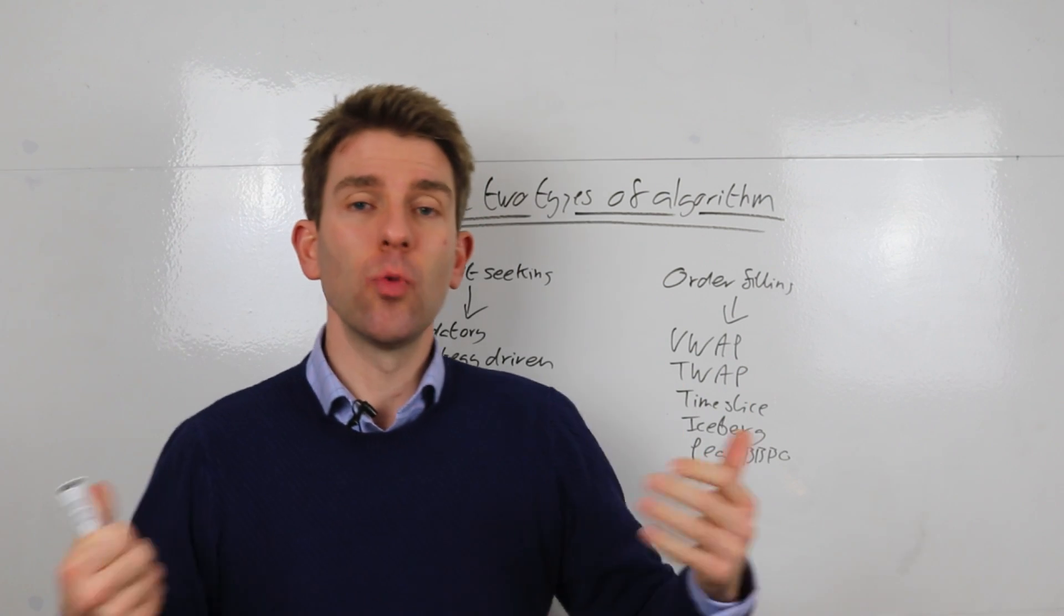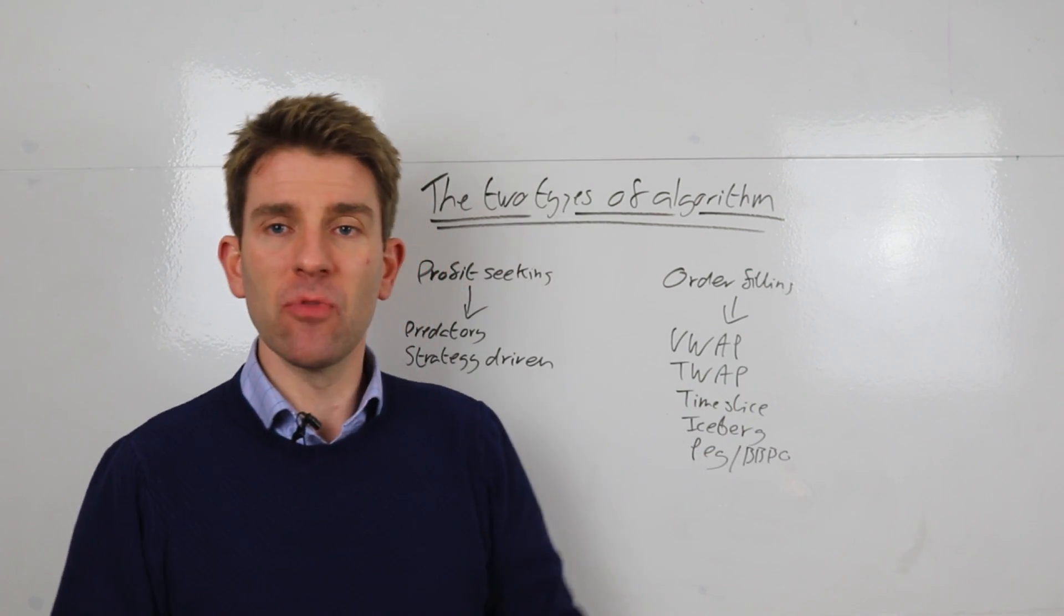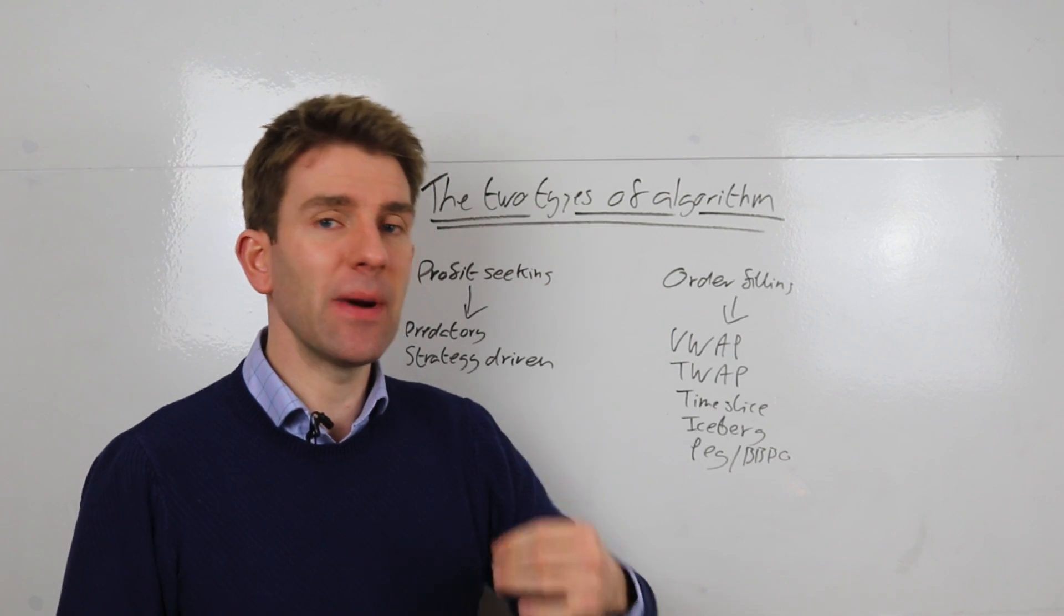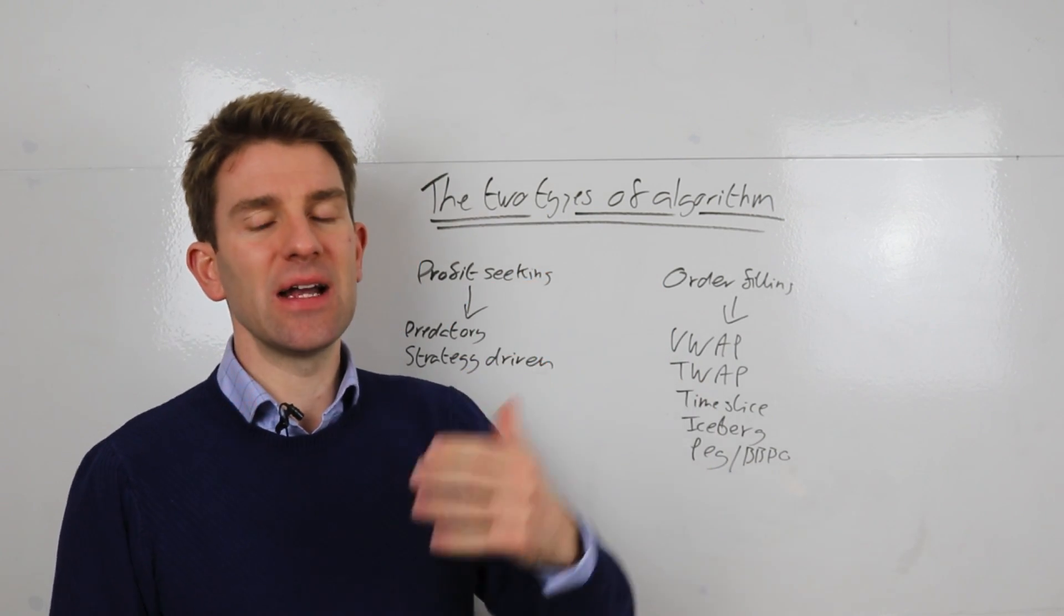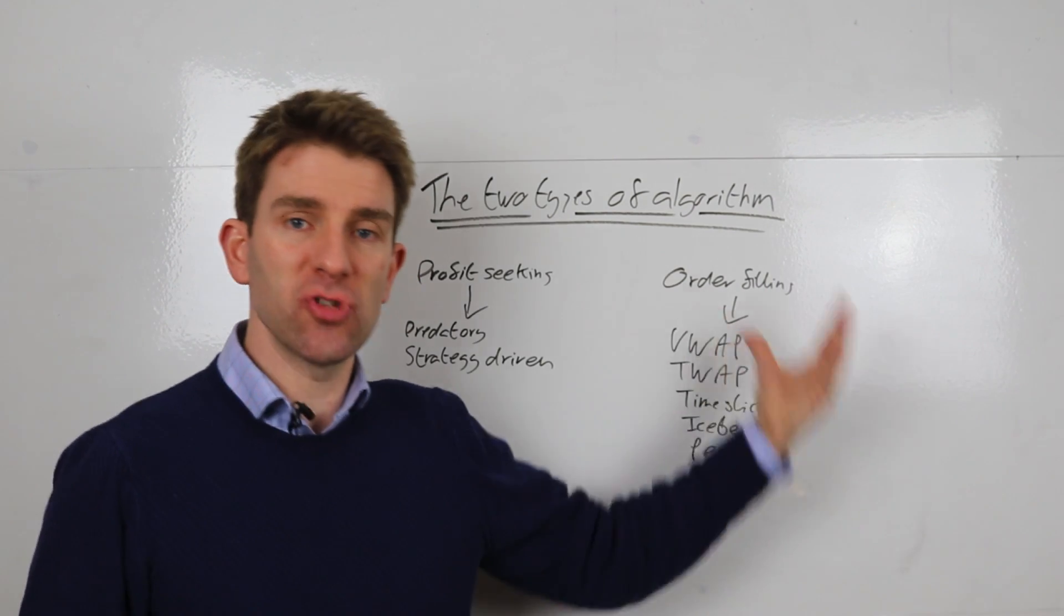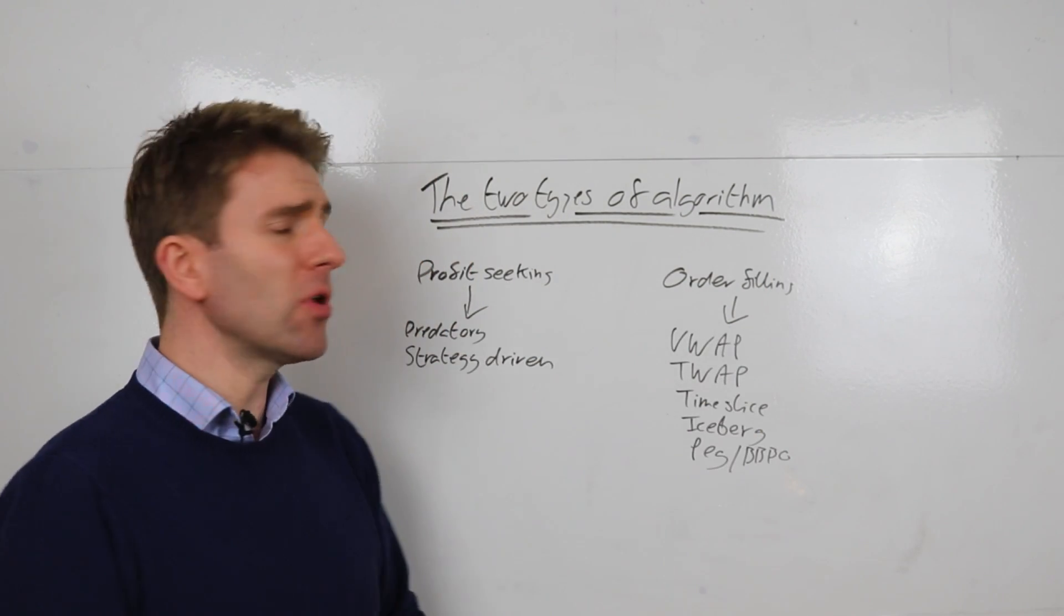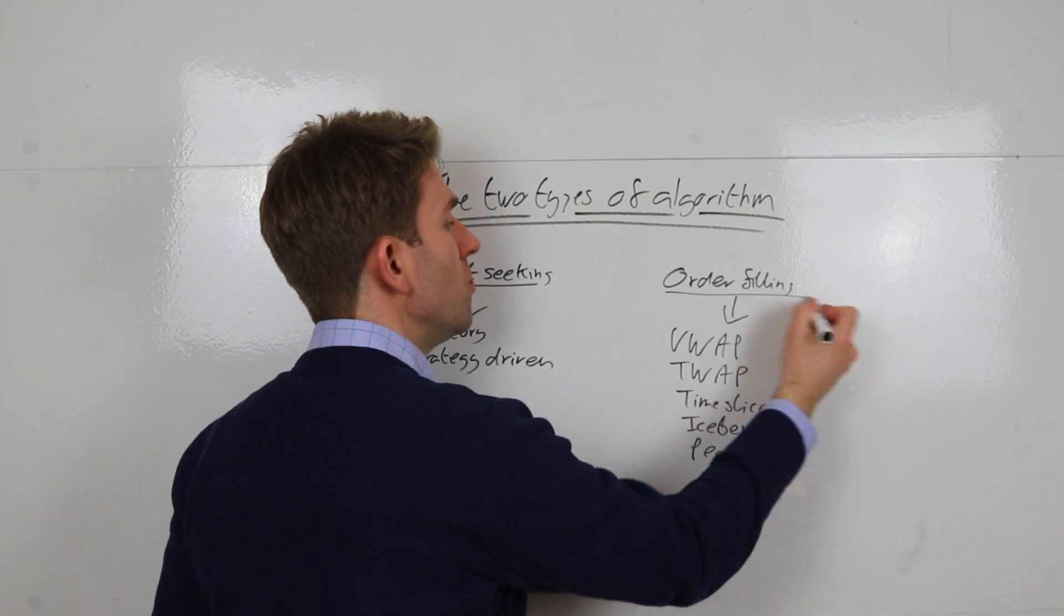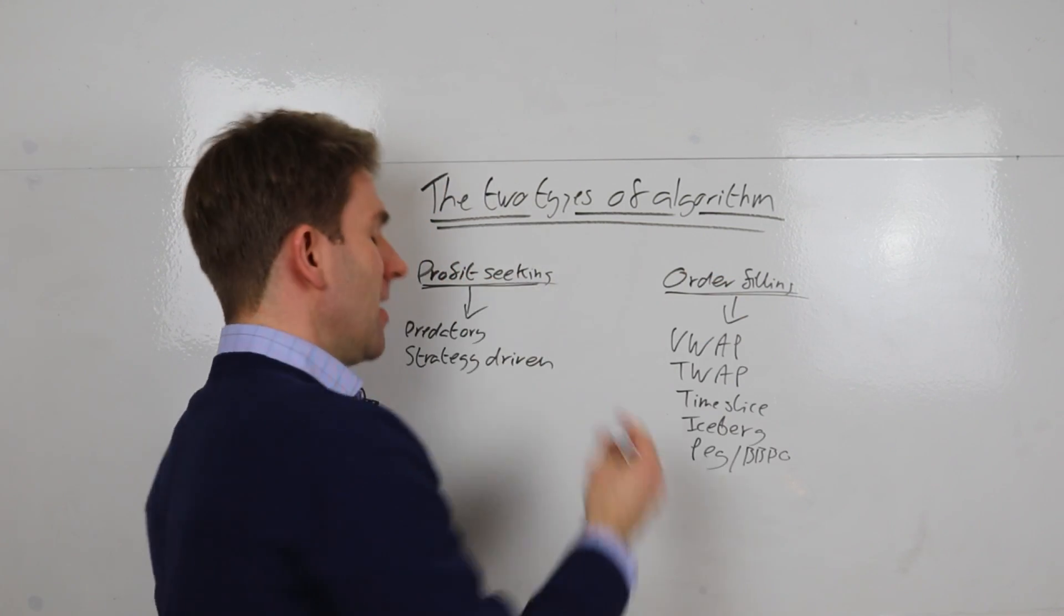So in this short video, let's cover the two different types of algorithm, what they're trying to do, maybe some examples. Now, we're going to deep dive into algos in other videos. We've talked specifically about the rules and the terminology that goes into what each of these algos are trying to do, but we'll touch on some of them here. What we're going to try and do is distinguish between the two broad types.